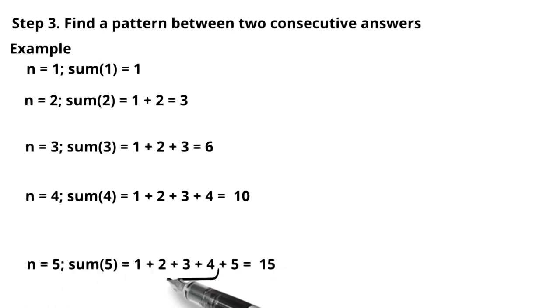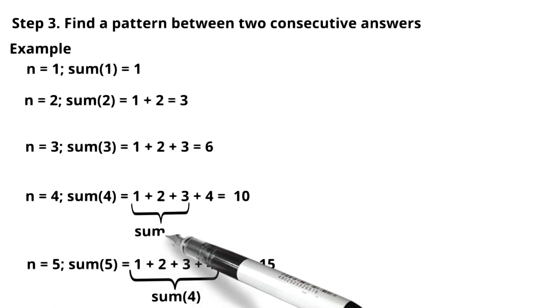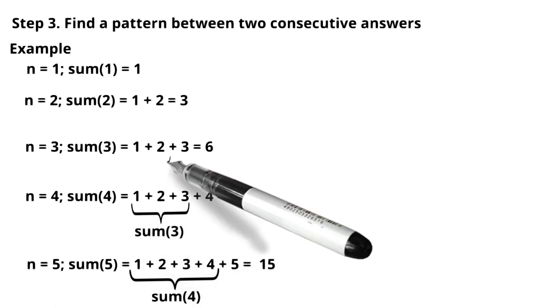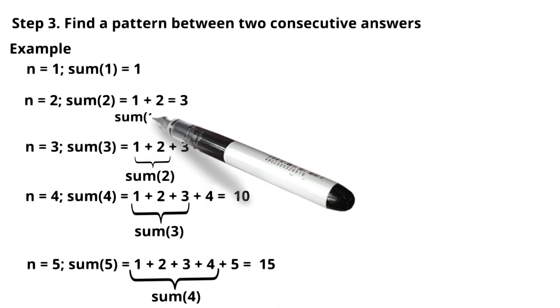As you can see, in the summation of 5, sum of 4 and 5 if you add, it will be 15. And for summation of 4, the output is summation of 3 plus 4. So this way, you can understand that there are some patterns we are getting in the sample answers.